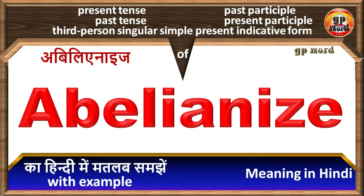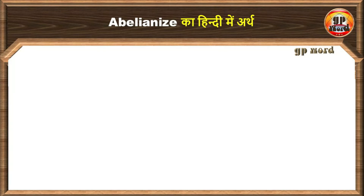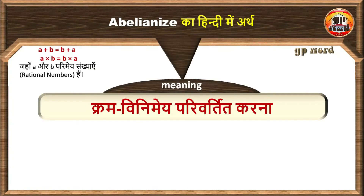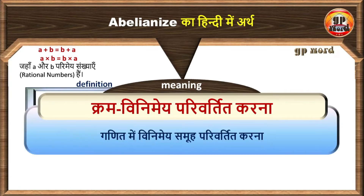GP word. Abelionize. Iska sahi hindi arth hota hai: tram vini mein pariwarthit karna. Iska matlab hai ganit mein vini mein samu pariwarthit karna.